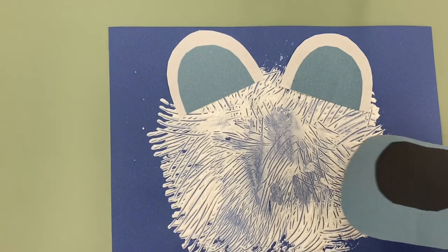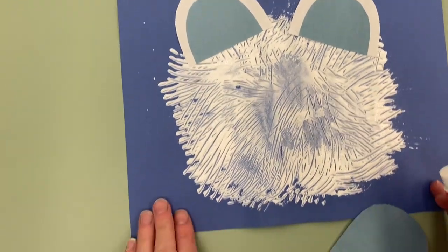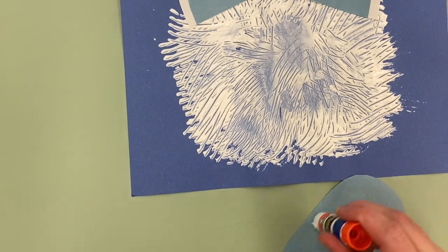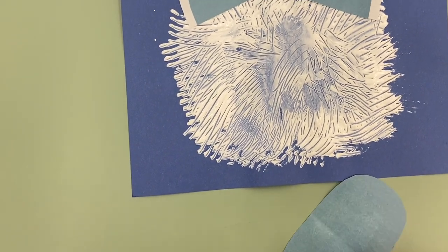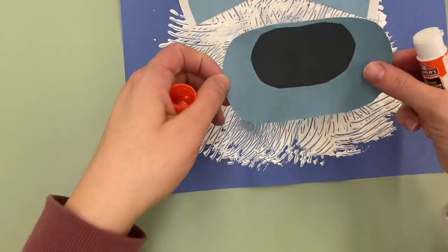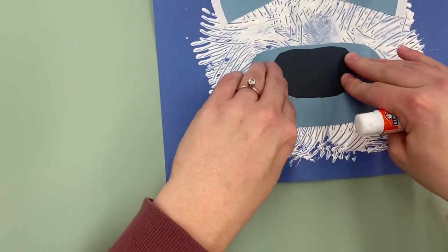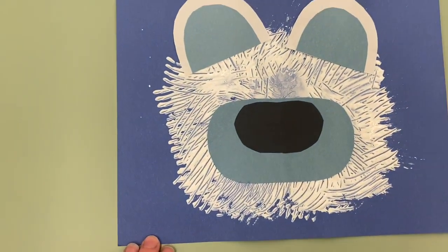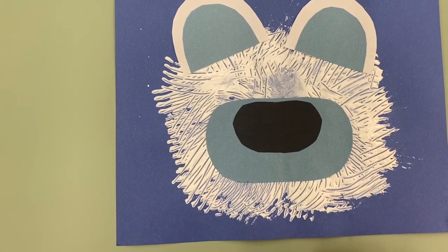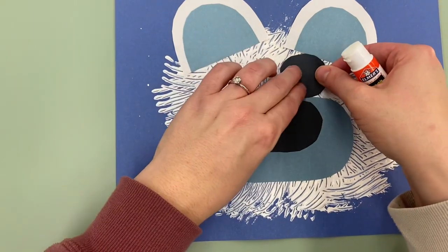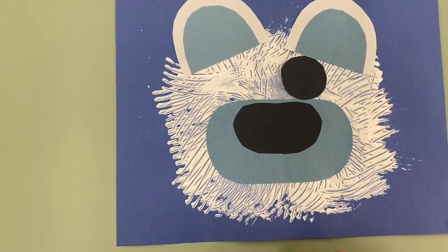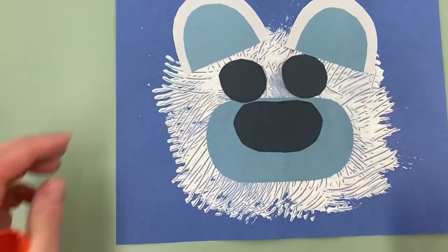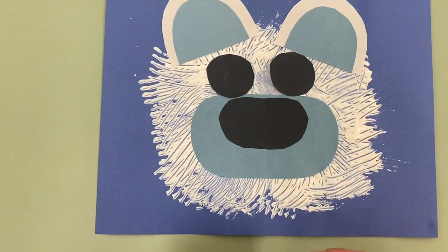Then I'm going to glue his nose on. I'm going to put it right here and press down, and then his eyes. I'm going to put some glue to one eye. I'm going to put his eye right here and his other eye. And I'm going to put this eye right there. He's kind of a silly polar bear, huh? I bet yours looks awesome.